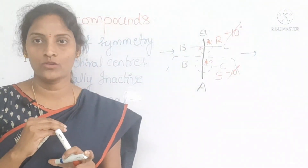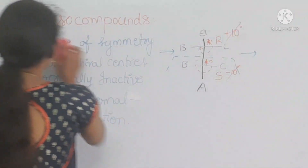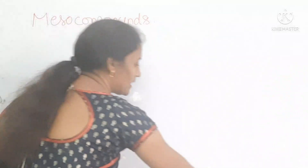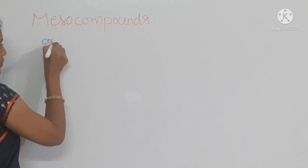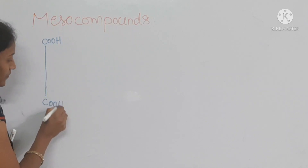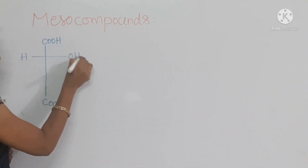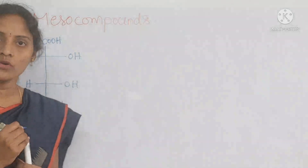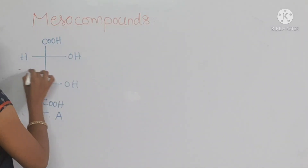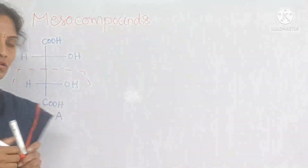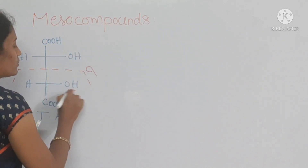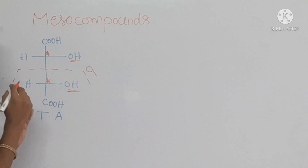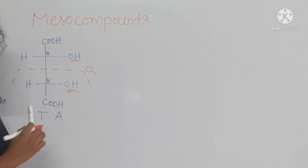Coming to examples, you can take the simple example of tartaric acid students: COOH, then COOH, here hydrogen and OH, here also hydrogen and OH. This is tartaric acid students. Is it a meso compound or not? Check it once yourself. If you cut this isomer into two equal halves, it will show a plane of symmetry. This OH touches with OH at C2 carbon, this hydrogen touches with hydrogen at C2 carbon, and this COOH touches with another COOH.